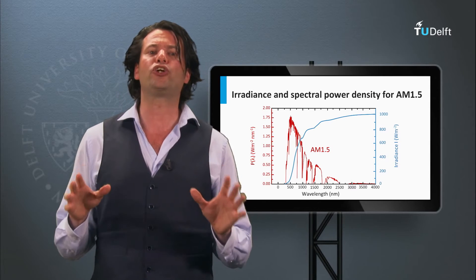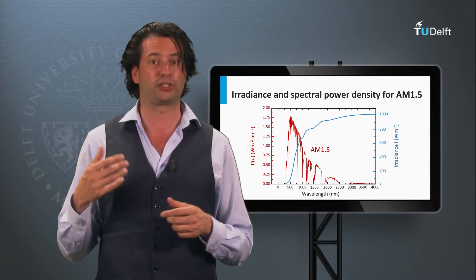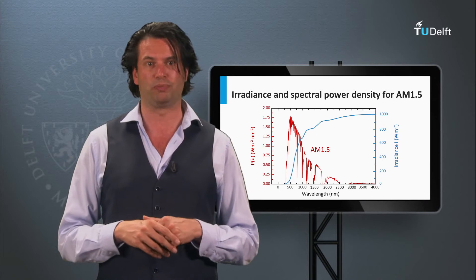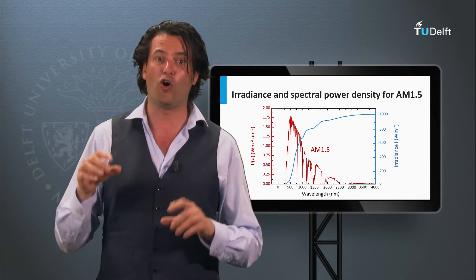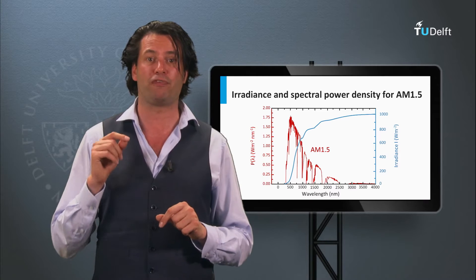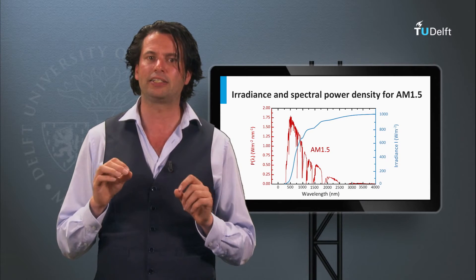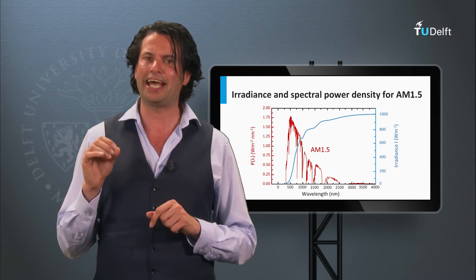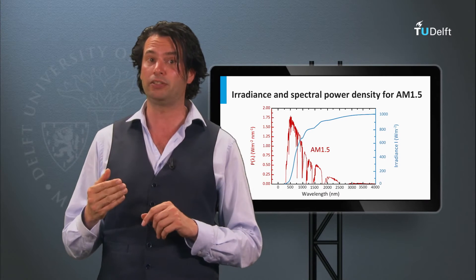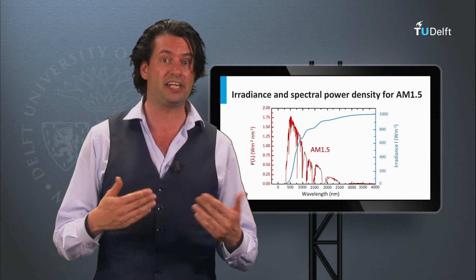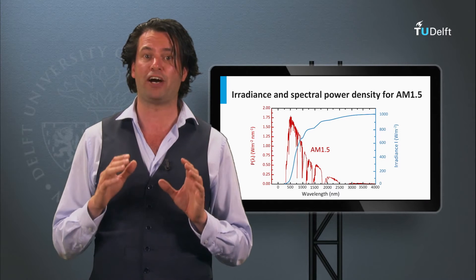In week 3 we will discuss how to determine the performance of solar cells using solar simulators — lamps which try to simulate the solar spectrum as closely as possible. The standard test conditions for the solar spectrum use the spectral shape of solar light with a path length of AM 1.5 through the atmosphere, and the irradiance of this spectrum is 1000 watts per square meter. The spectral power density of the AM 1.5 spectrum is plotted here.